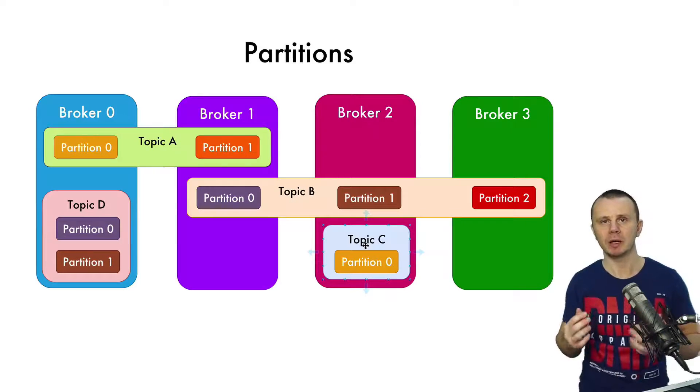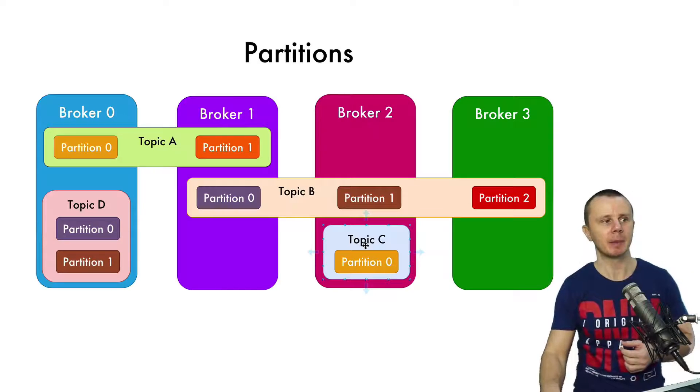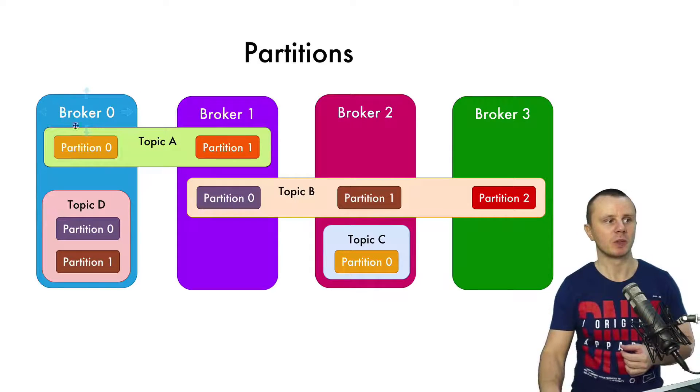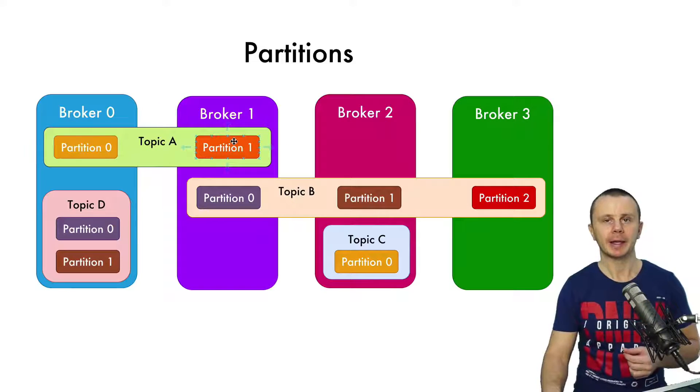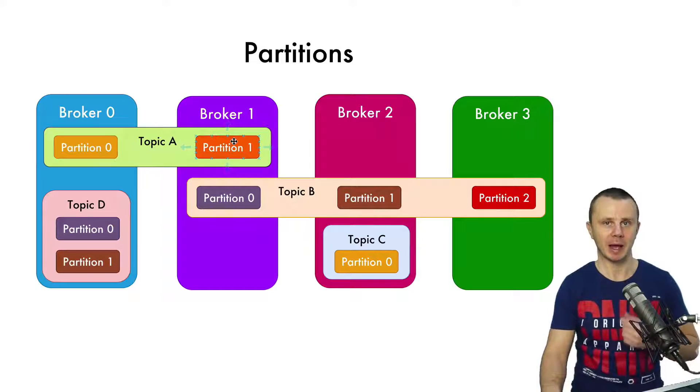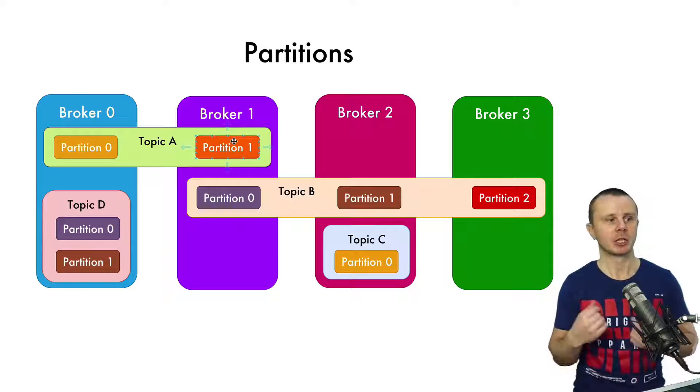Also, it makes topics fault tolerant. In this example, if broker 0 fails, Topic A will still be present on broker 1 and it will still accept new messages and accept new read requests from consumers. That's why partitions are needed.